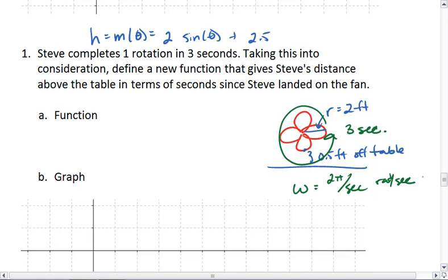The reason we like this is because if we know Steve's angular speed, 2π radians per second, or I'm sorry, 2π radians per 3 seconds. There we go, 2π over 3.